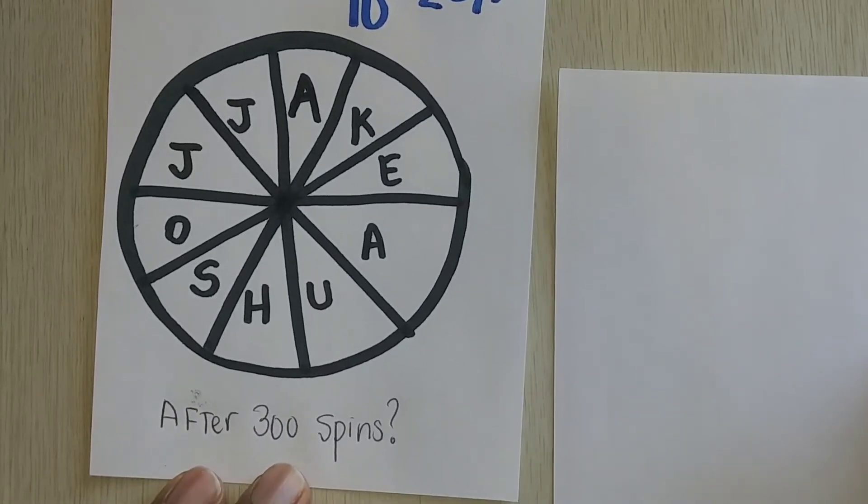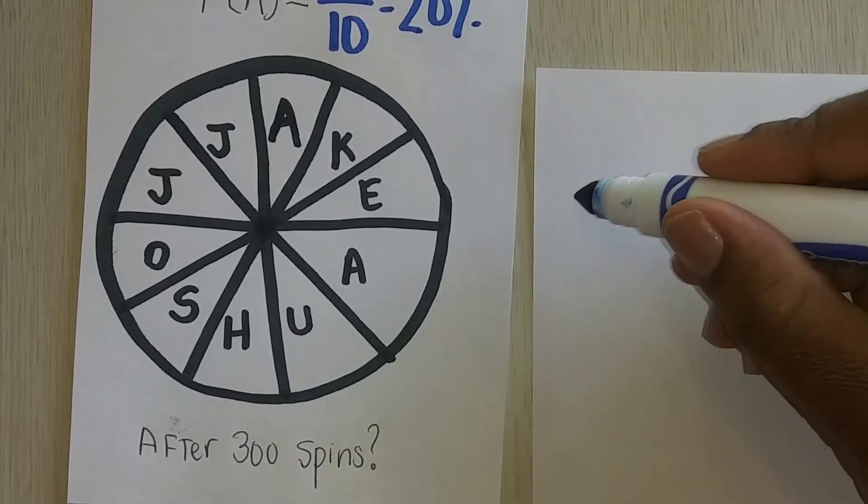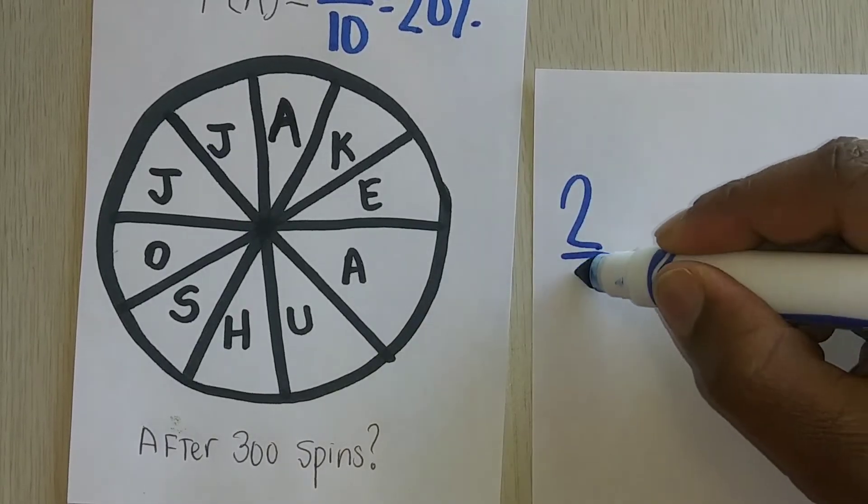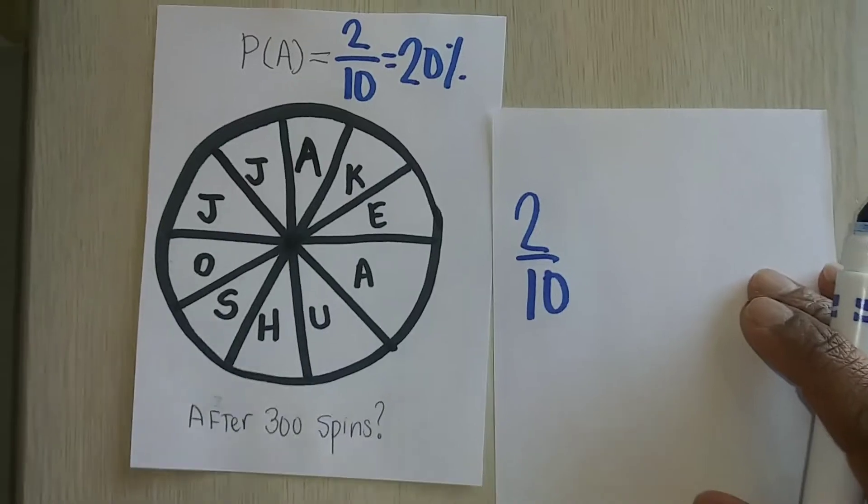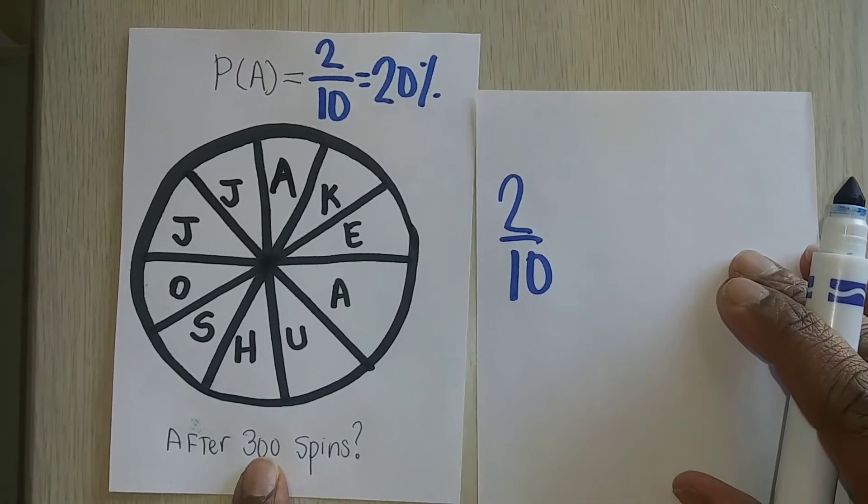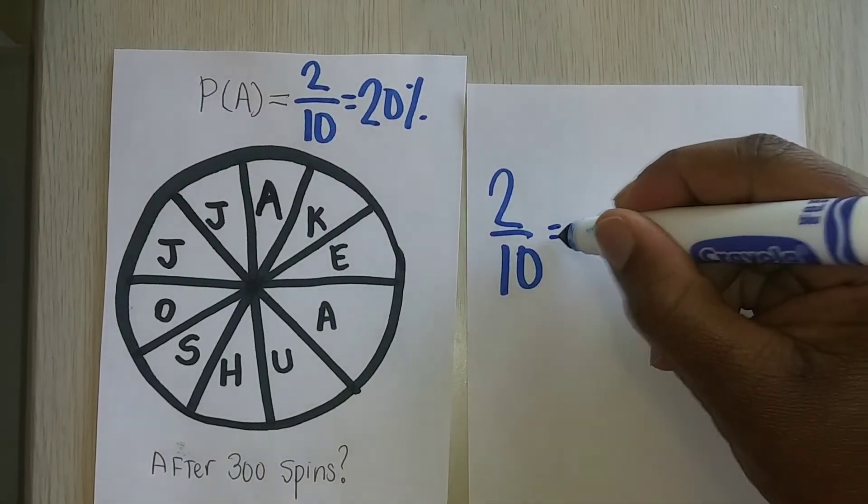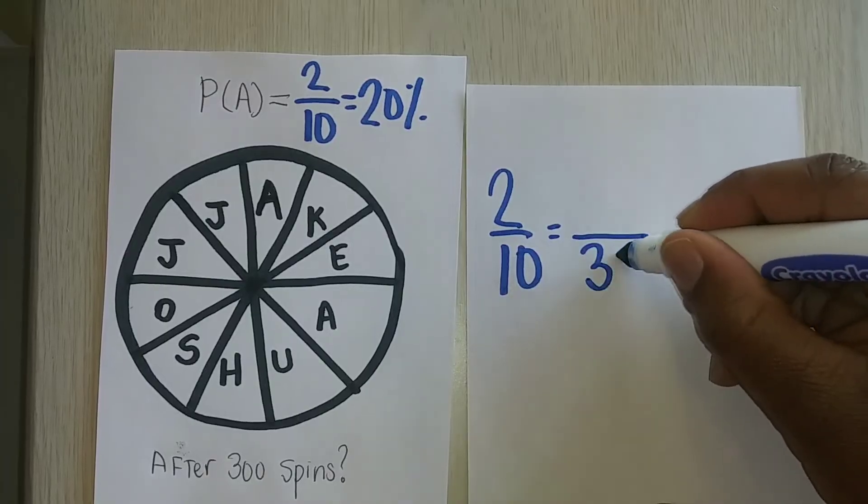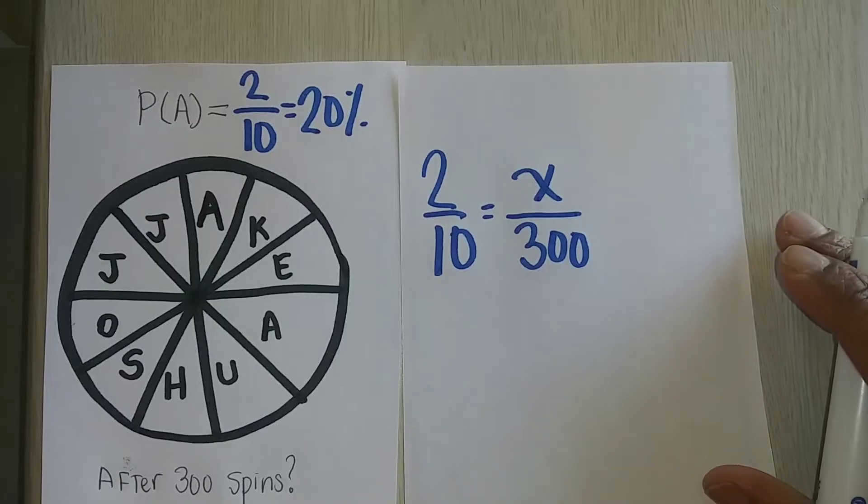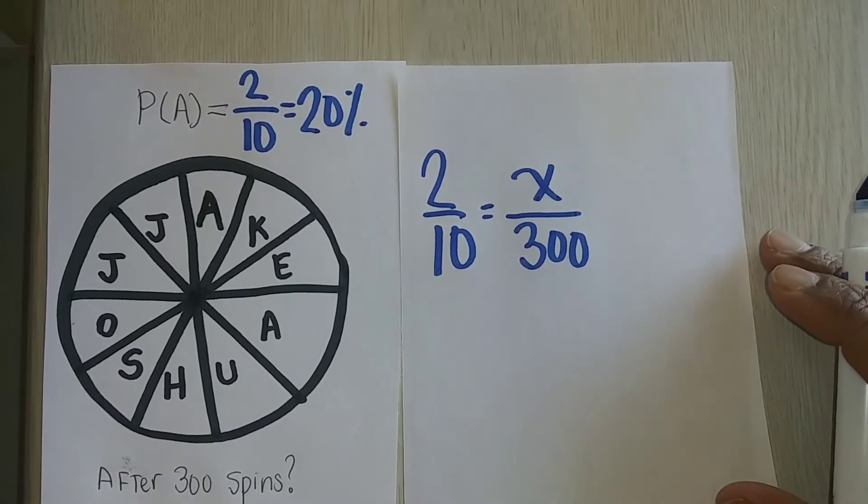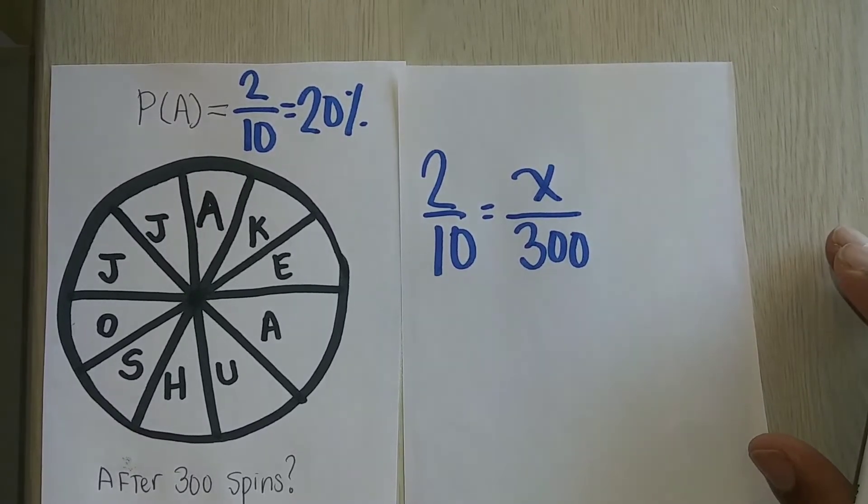Now, if you take a look at this, I can go even further. So if there's a two out of ten chance that it will land on the letter A, well, what happens after 300 spins? Let's see. After 300 spins, let's figure out how many are we expected to land on the letter A.